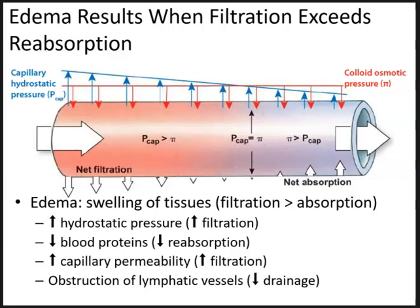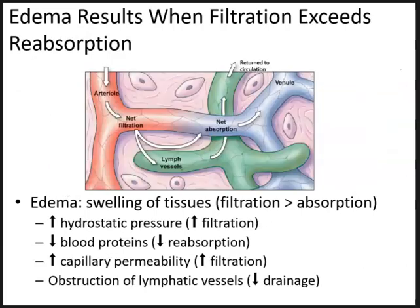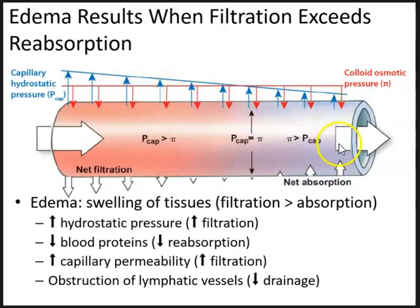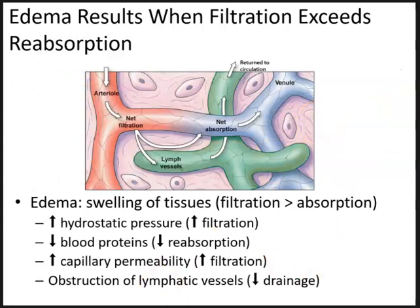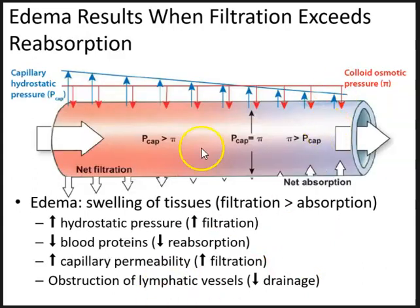Regarding a decrease in blood proteins: there is a picture in your book of a patient with kwashiorkor. Kwashiorkor is a pathological condition causing protein malnutrition. The picture shows a Nigerian refugee with the characteristic abdominal edema known as ascites, caused by a decrease in plasma protein concentration, usually due to severe malnutrition.